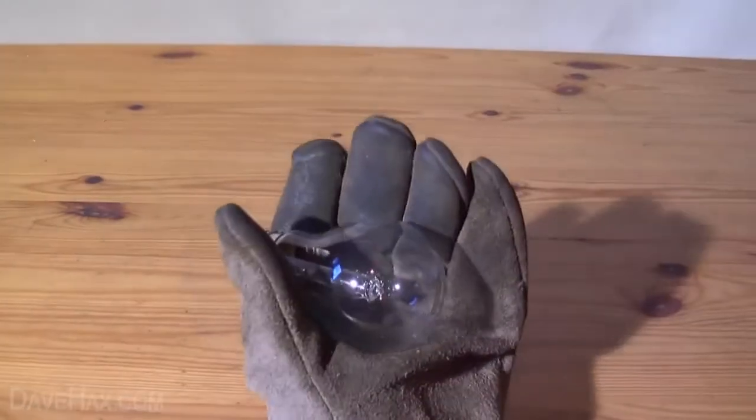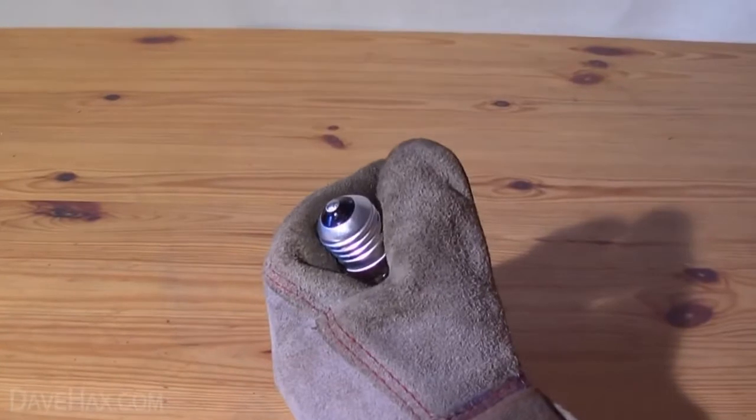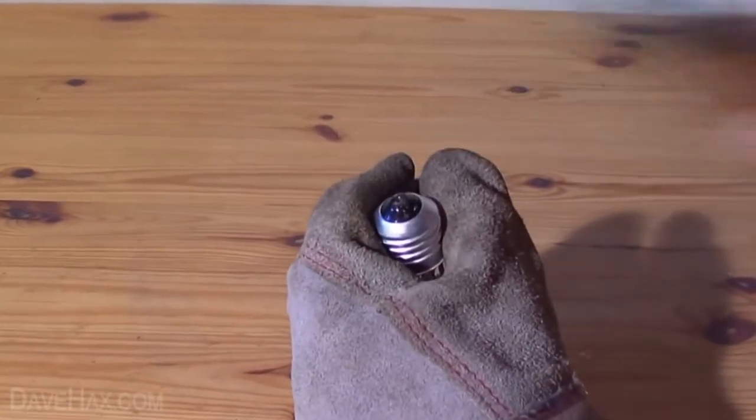We're going to start by putting on eye protection and a thick safety glove. Then take a firm grip of the bulb and using some pliers remove the contact at the end of it.